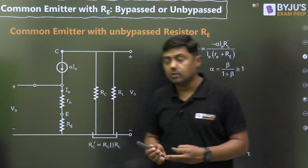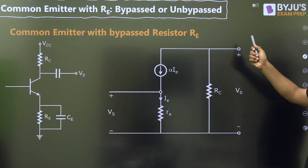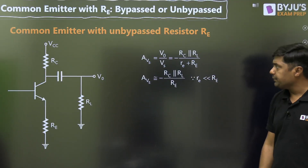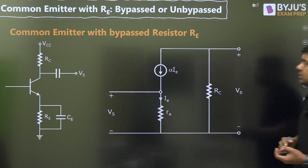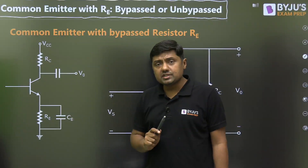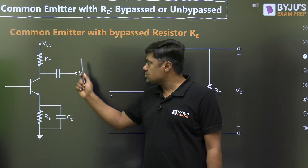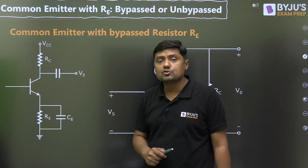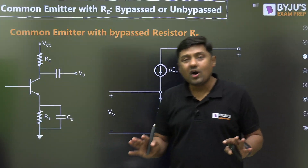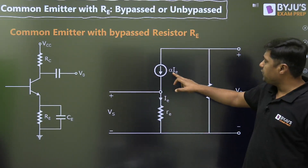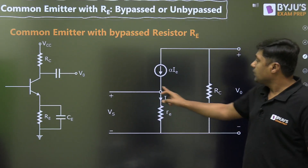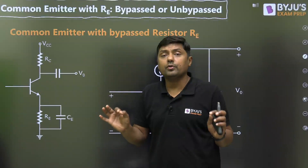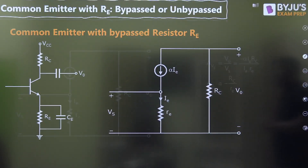You can revise all formulas from the table: V0/Vs = minus (RC parallel with RL) divided by (small re + capital RE) for unbypassed RE. Now, when we connect a capacitor in parallel to RE, during AC analysis all capacitors act as short circuit, including the one across RE, which short-circuits RE so there is no RE in the AC path. The small signal model becomes: alpha·IE with small re, emitter connected to ground, Vs at the base, and RC connected at the collector since VCC tends to zero.